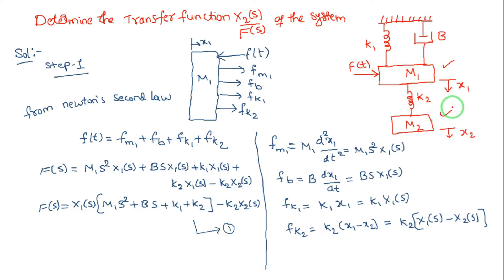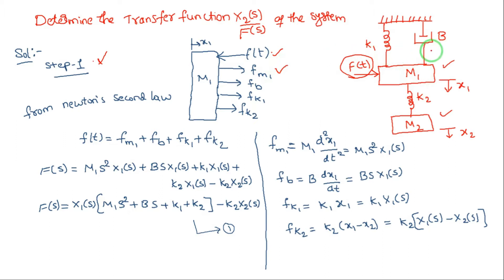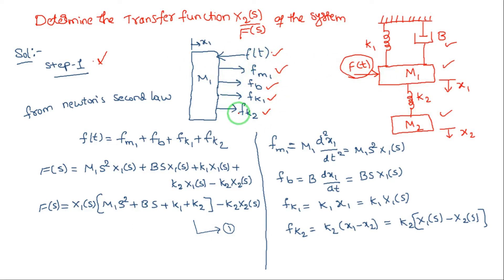First, identify the number of masses in the given system — there are two masses. For Step 1, take mass m1 and identify the applied forces and opposing forces. For m1, the applied force is f(t). The opposing forces are: fm1 due to mass m1, fb due to friction constant b, fk1 due to spring k1, and fk2 due to spring k2.